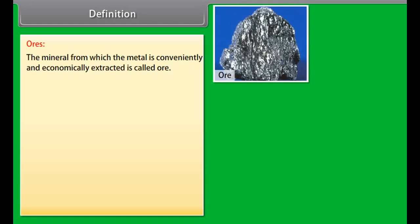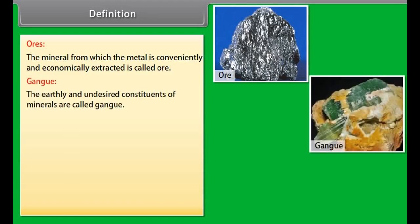Definition. Ores: The mineral from which the metal is conveniently and economically extracted is called ore. Gang: The earthly and undesired constituents of minerals are called gang.